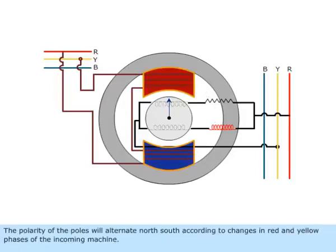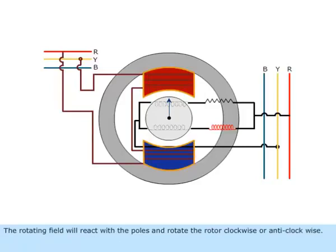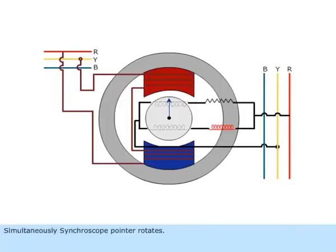The polarity of the poles will alternate north-south according to changes in red and yellow phases of the incoming machine. The rotating field will react with the poles and rotate the rotor clockwise or anticlockwise. Simultaneously, the synchroscope pointer rotates.